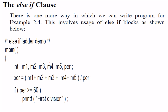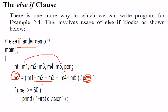We can write the program like this. This is an if-ladder demo and we just take M1 to M5 and add them all, dividing by 5. What we get here is percentage — we add them and divide by the value 5. If there are 5 subjects, then we say it is PR.